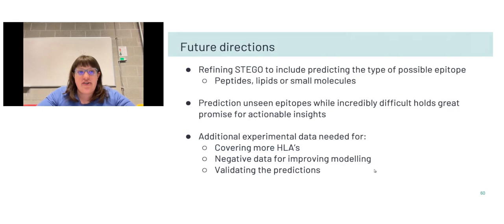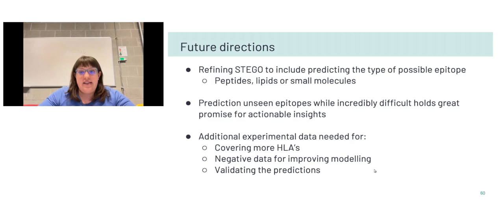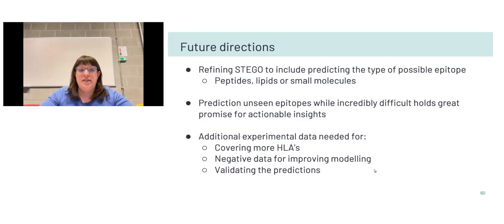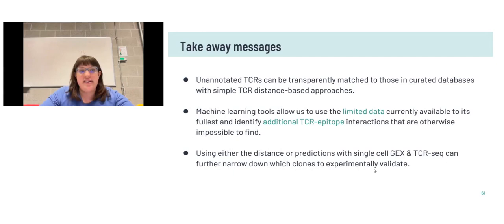For future directions in this prediction space: one goal is refining strategies within the STEGO tool to help narrow down whether epitope predictions are for peptides, lipids, or small molecules, as most current data focuses on peptide-driven interactions. Predictions for unseen epitopes hold great promise for actionable insights but need improvement. A critical need is the addition of experimental data covering more HLA alleles, replicates of epitope interactions to improve negative data for modeling, and validation of current predictions.